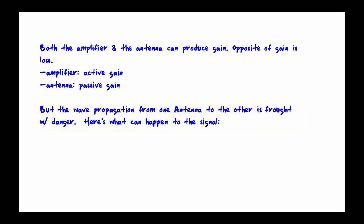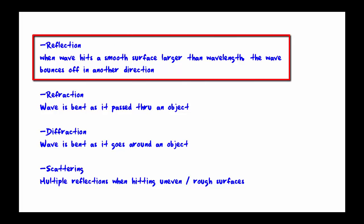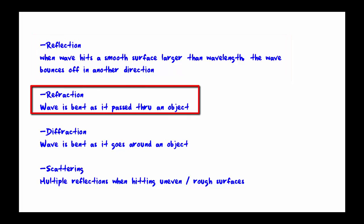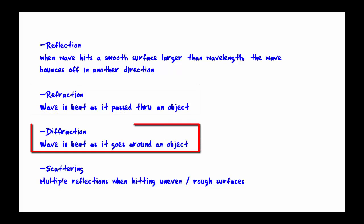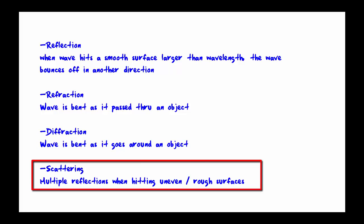The first is reflection, and that occurs when a wave hits a smooth surface larger than the wavelength. The wave bounces off in another direction. Then you have refraction, where the wave is bent as it passes through an object. You have diffraction, where the wave is bent as it goes around an object. And you have scattering, where you have multiple reflections caused by hitting an uneven or a rough surface.